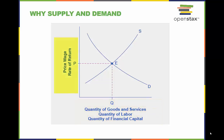The vertical axis shows a measure of price: the price of a good or service, the wage in the labor market, or the rate of return like the interest rate in the financial market.